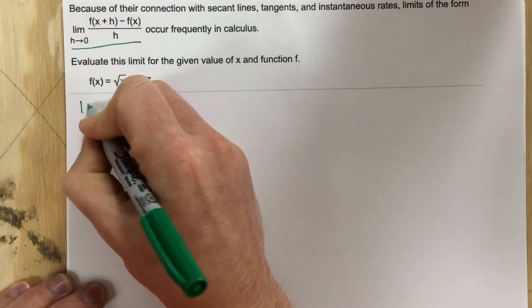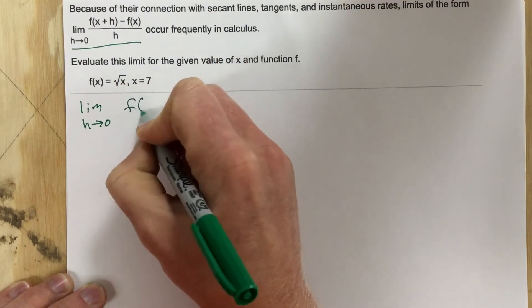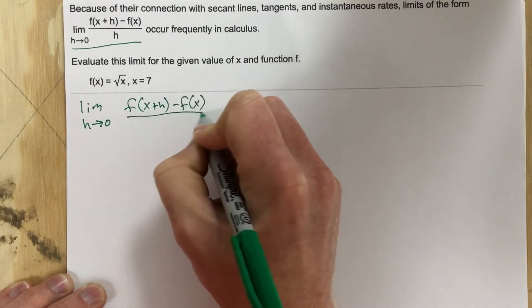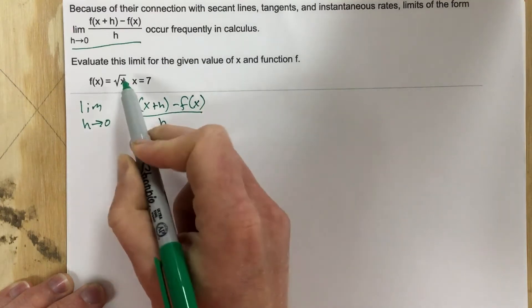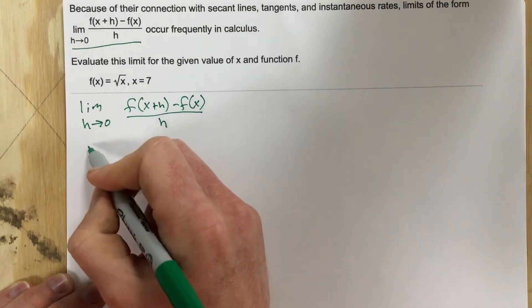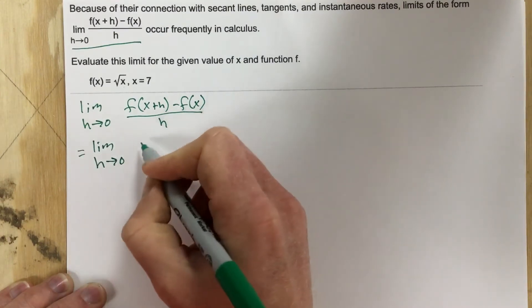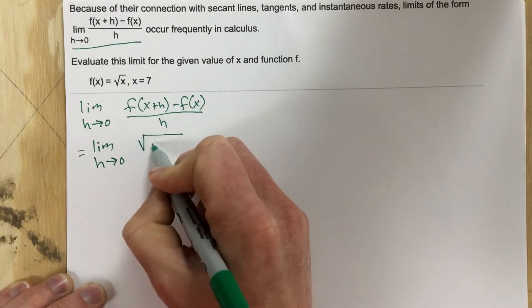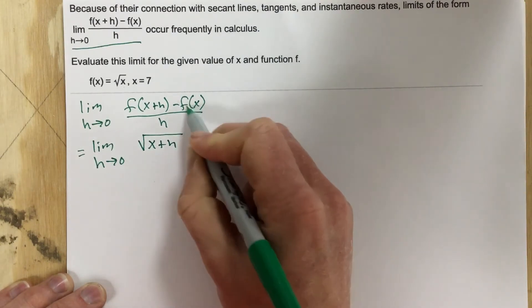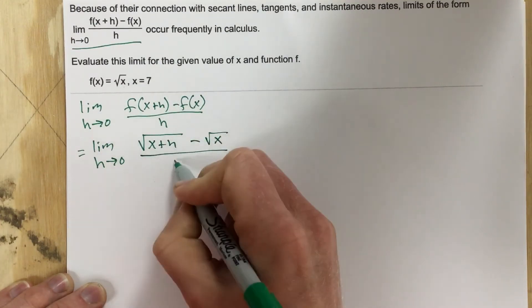So we're going to say limit as h approaches 0 of f of x plus h minus f of x all over h. And we're going to take this x plus h, we're going to plug it into the root function. So we end up with limit as h approaches 0, we get root x plus h minus the function itself, which is just root x, and that's all over h.